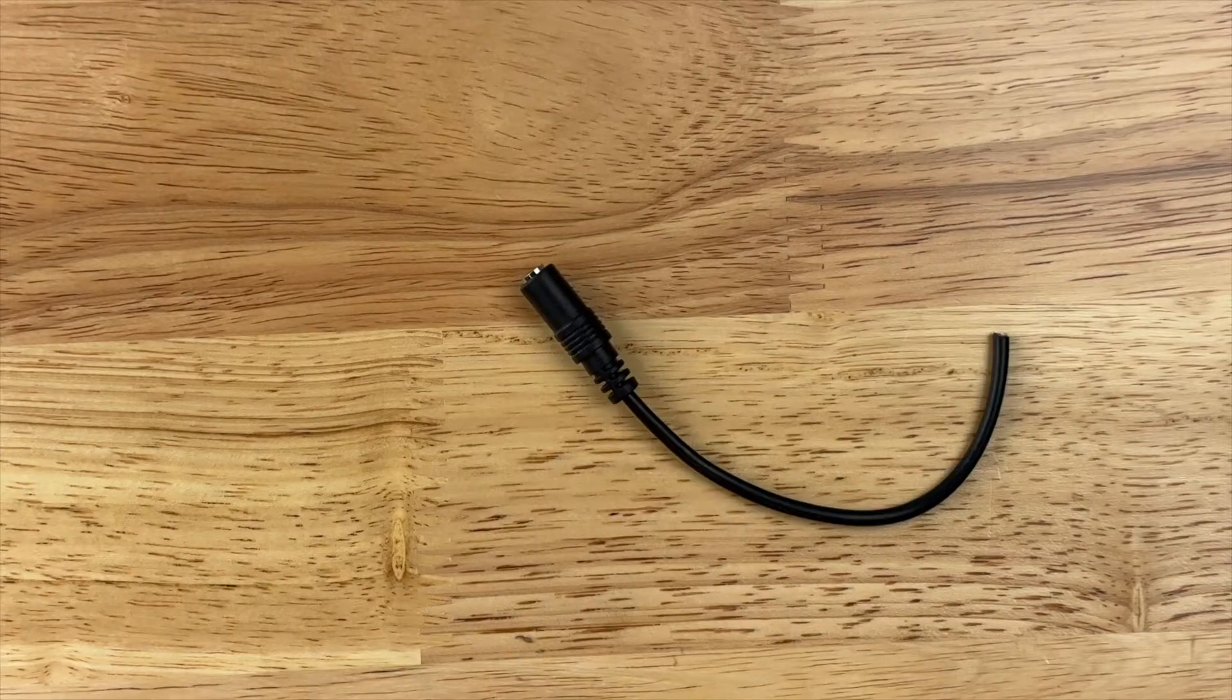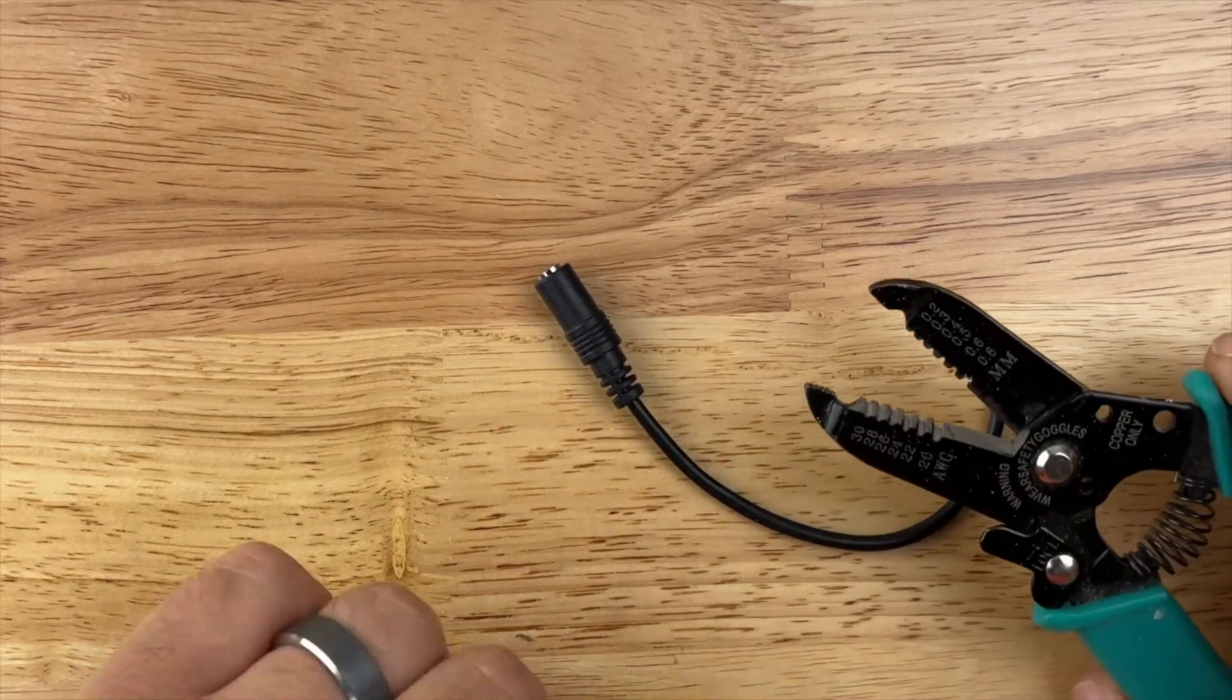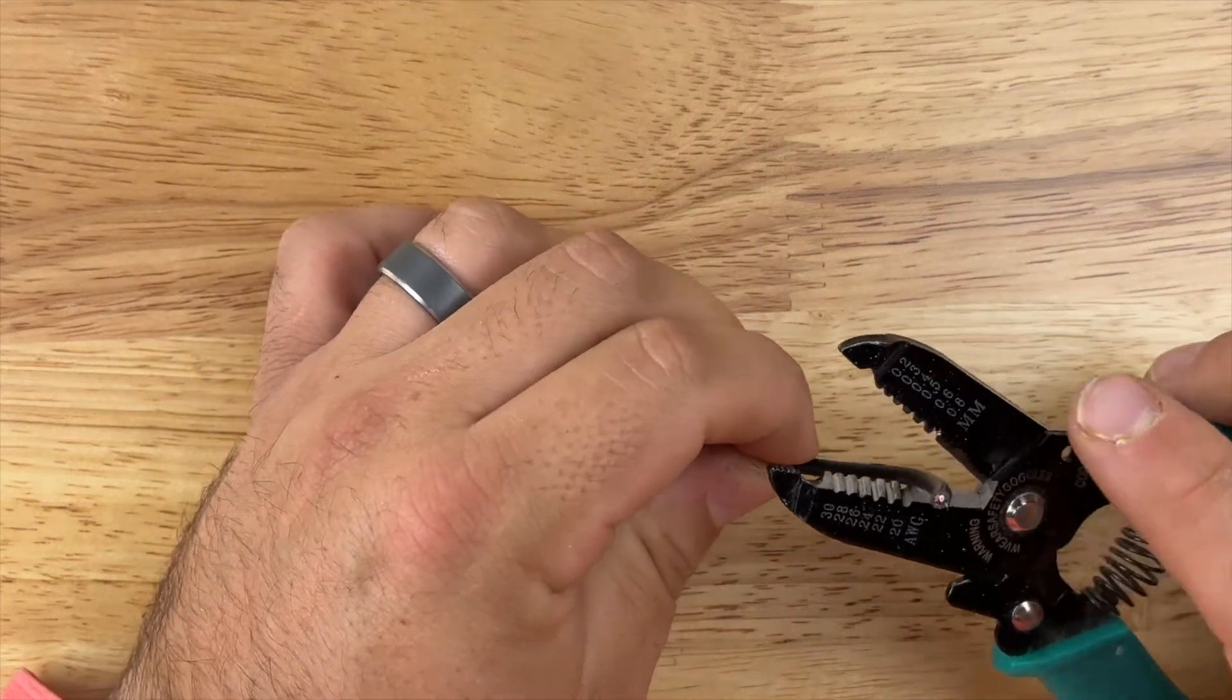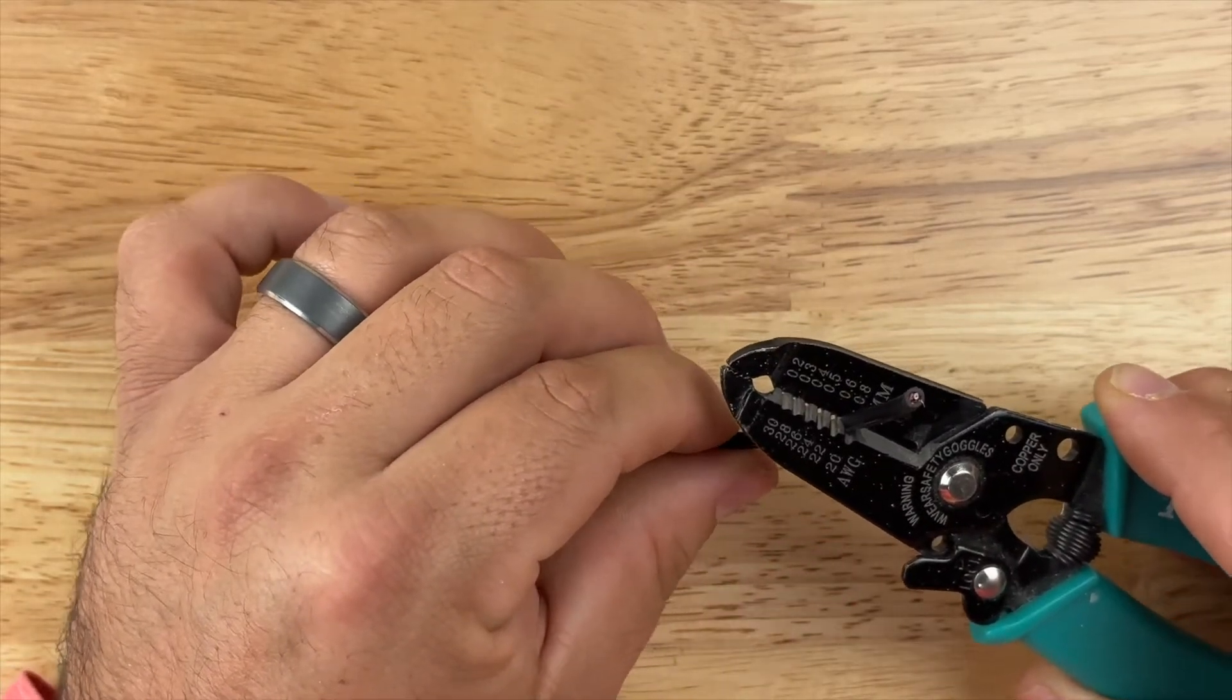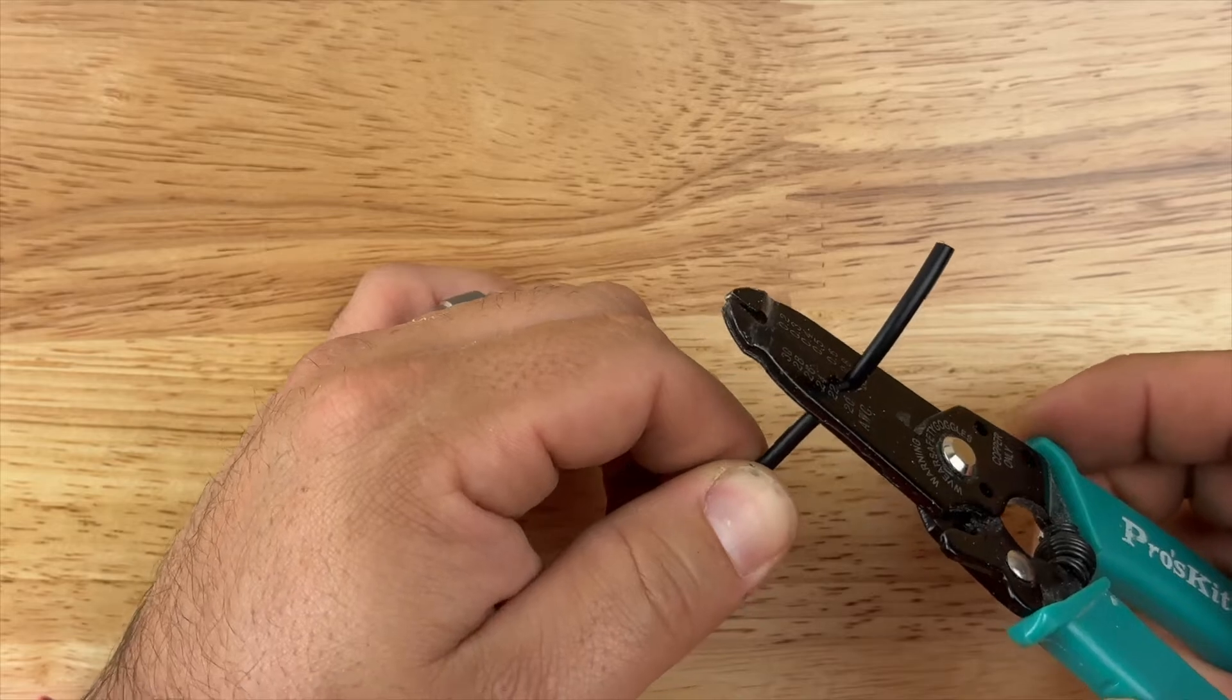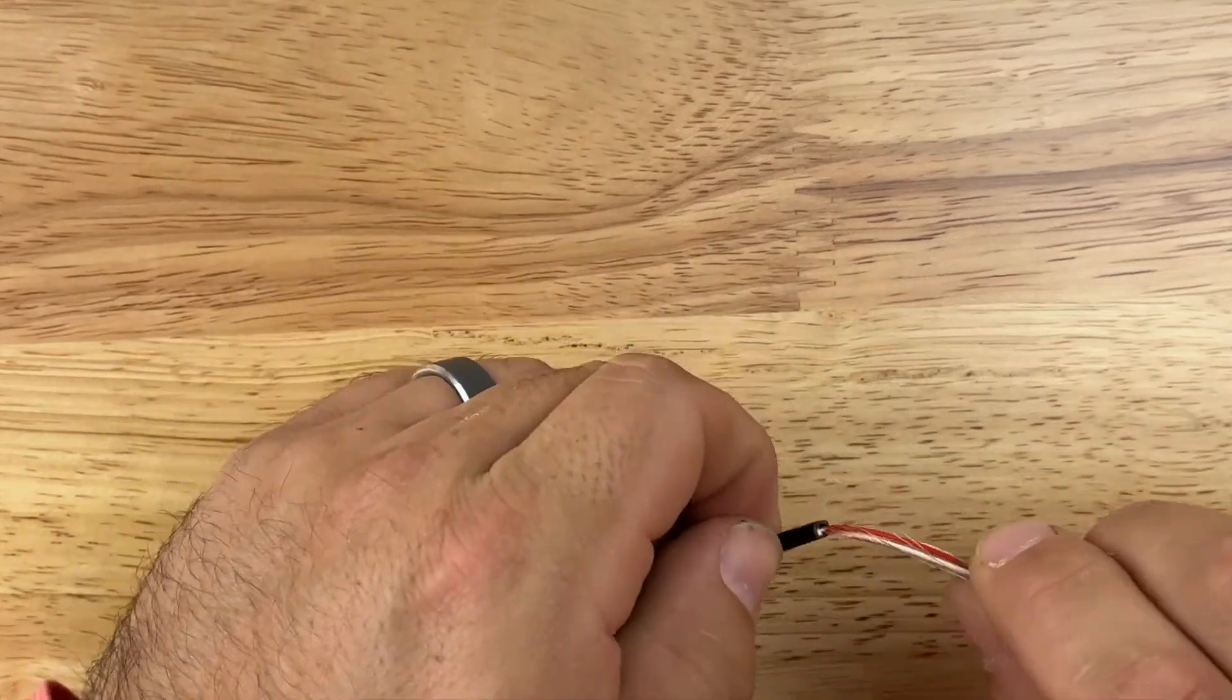So now, just dealing with a single connector, we need to remove this black outside casing. To do that we'll use wire strippers on the 20 gauge setting. Basically all you do is fit the wire in that little crease, pinch down. That cuts the outside casing. I'm going to rotate the wire or rotate the stripper itself and just lightly pull off that casing. That exposes our wires underneath.